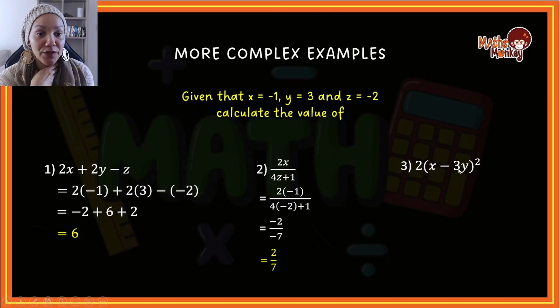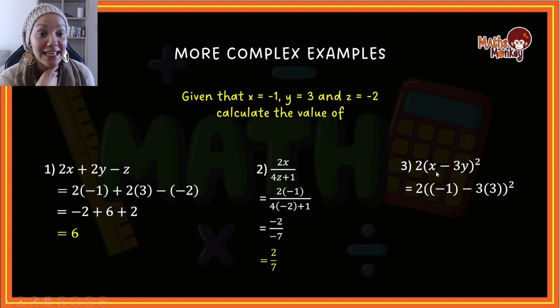Last question. Here you'll see again all we do is wherever we see the variables, we will replace them with the values. But here I want to emphasize grade 8 that if you have 2 times a bracket and the bracket is squared, you have to first find the answer of what is inside the bracket, square the answer, and then multiply it by 2. So we've got the values here, and this is negative 1, and this will give me negative 9.